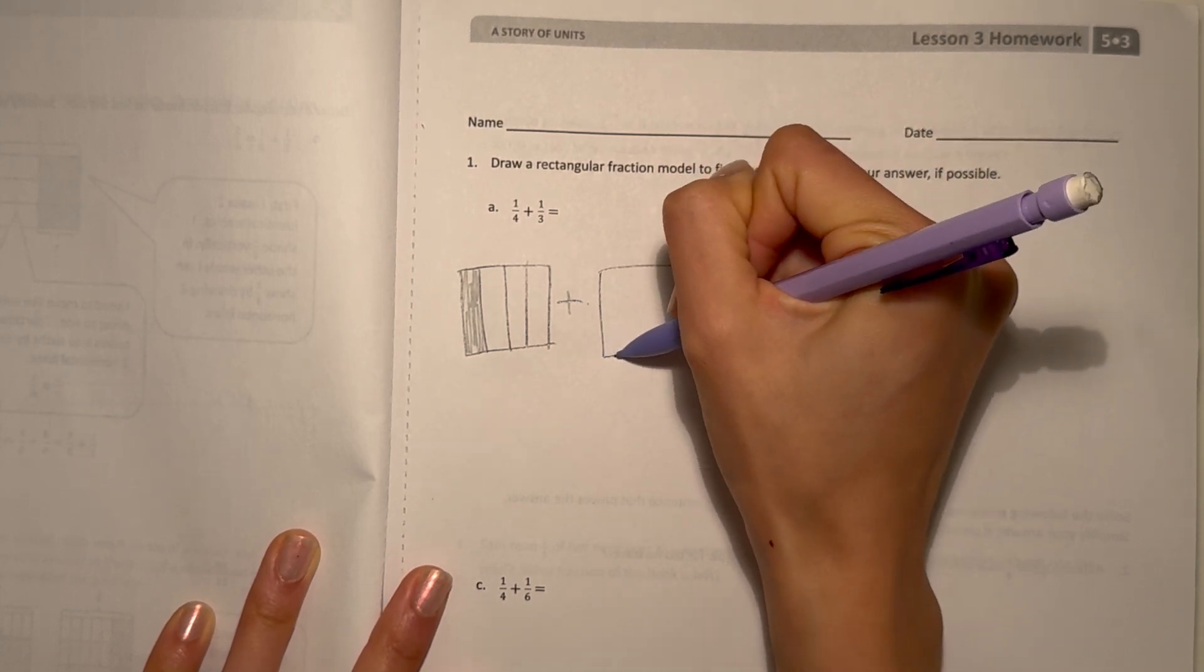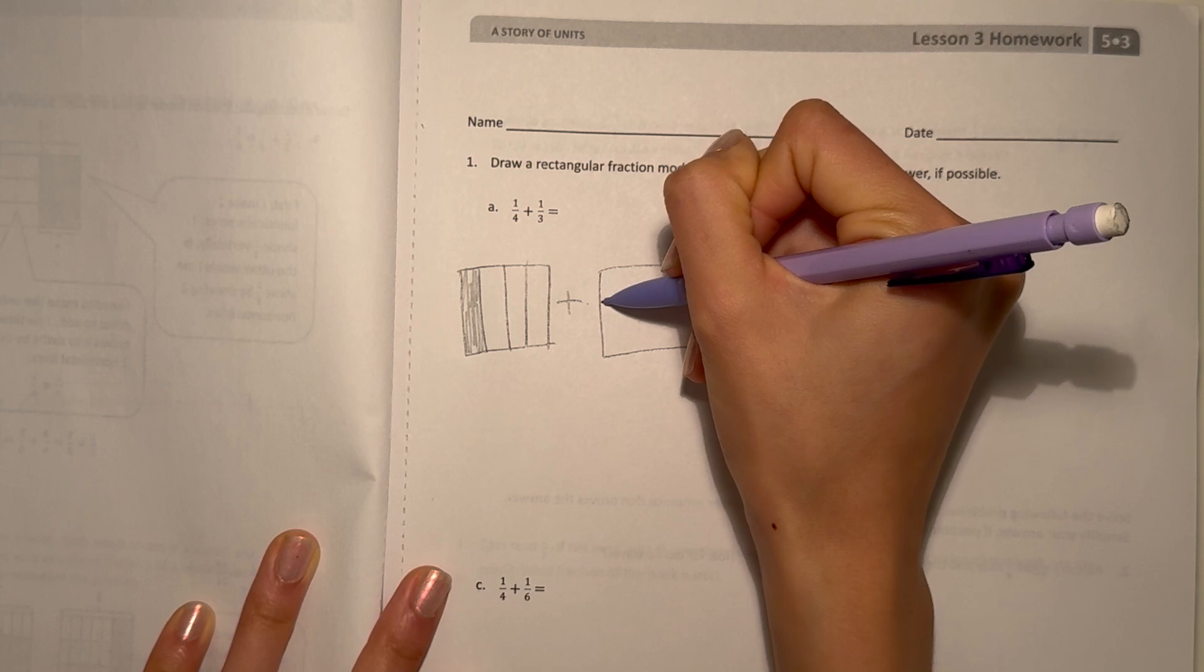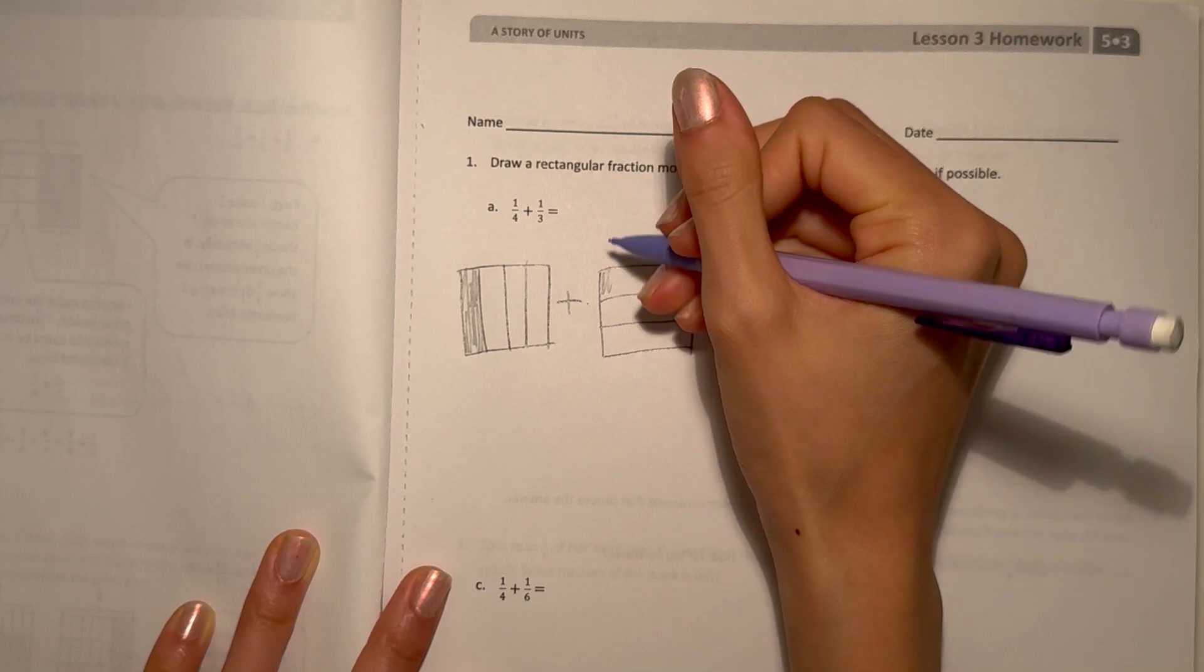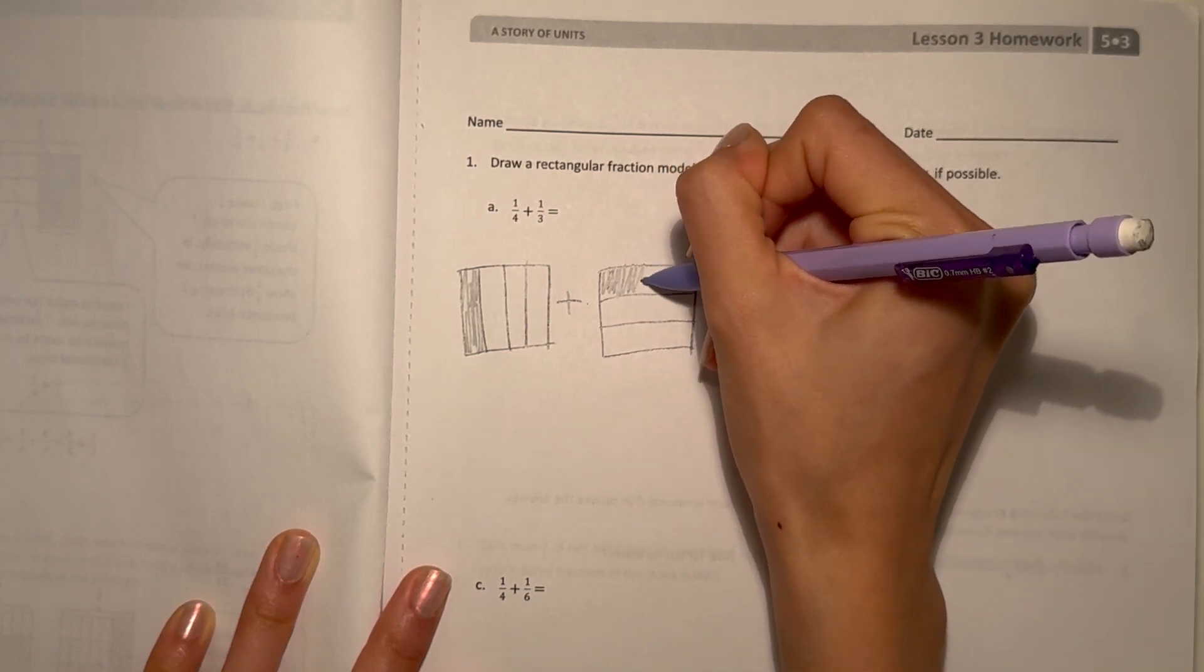This time we're actually going to make this horizontal. Split into thirds and shade in, I guess you could do bottom or top. Shade in one-third.